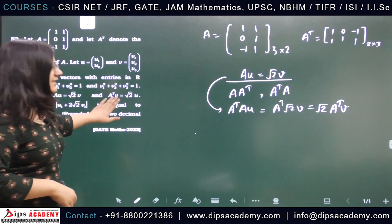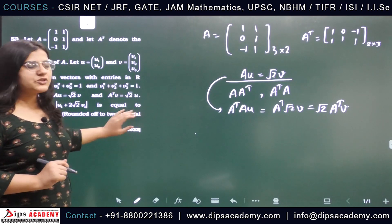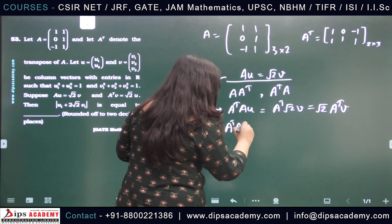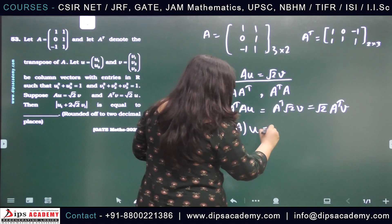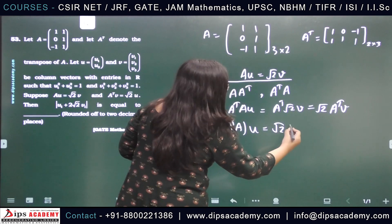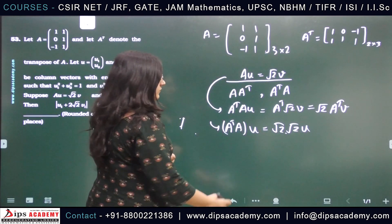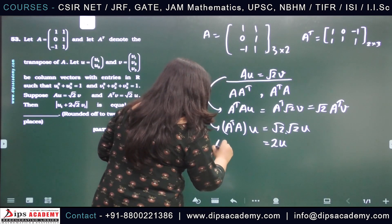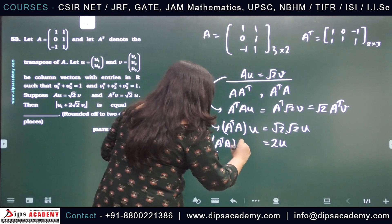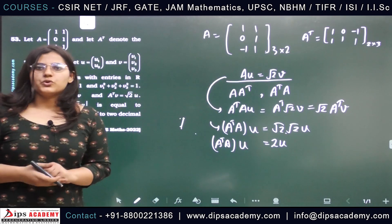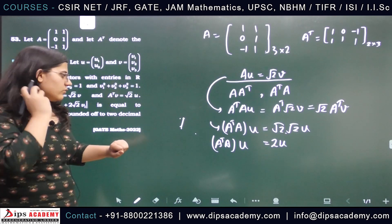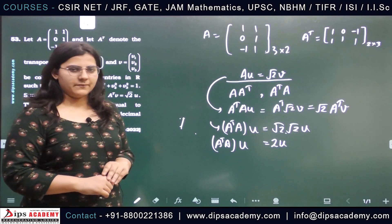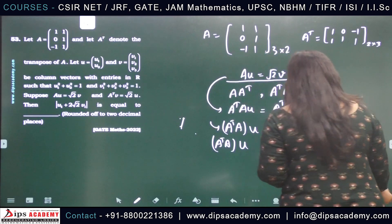Now, A^T·v as given in the question is √2 times vector u. So, A^T·A·u = √2 × √2·u = 2u. We can say that 2 is an eigenvalue of matrix A^T·A, since u is a non-zero vector.